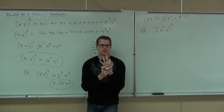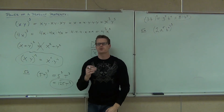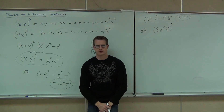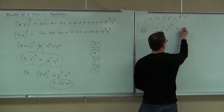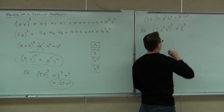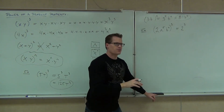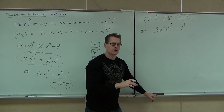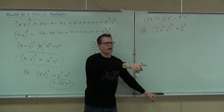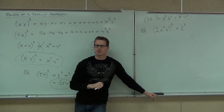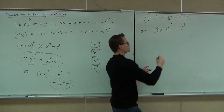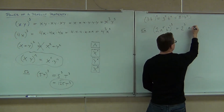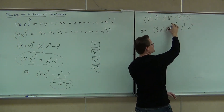So what's the first thing? Take care of the 2. 2 to the 3rd. Now wait a second — what about a to the 5th? You've got to multiply the exponents. Do you see how we're combining two rules here? We're going to get a to the 15th because we're going to multiply the 5 times the 3.